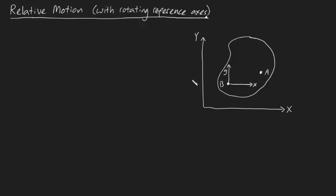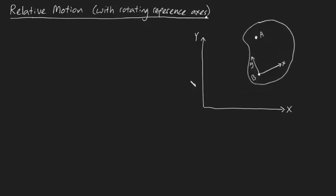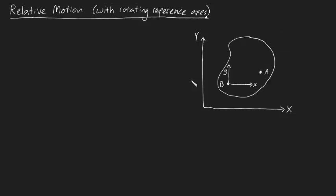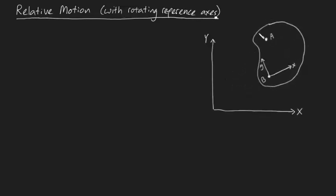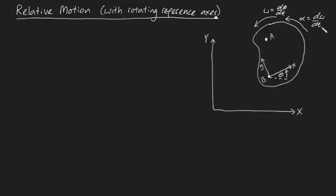The main thing to stress from this animation is that our reference axes XY are in fact rotating. We can quantify how much they rotate by defining an angle theta from the horizontal. If we define theta this way, then we have expressions for the angular velocity omega and angular acceleration alpha of our plate: omega will be dθ/dt and alpha will be dω/dt.